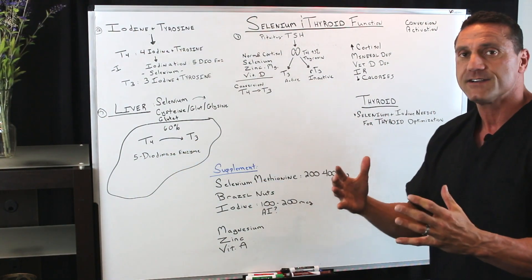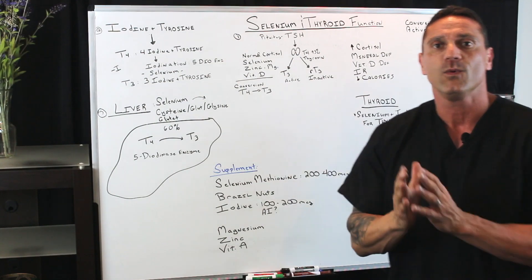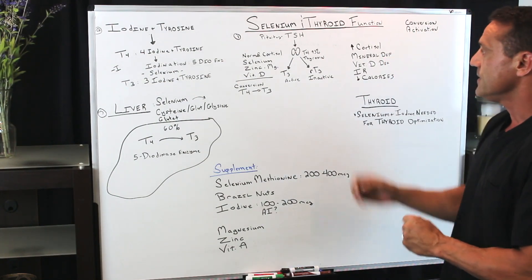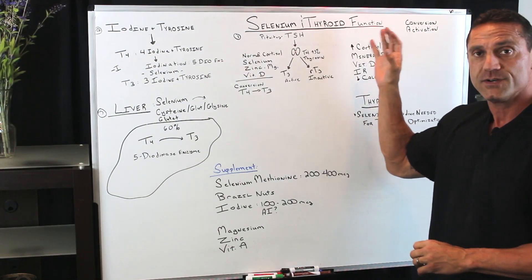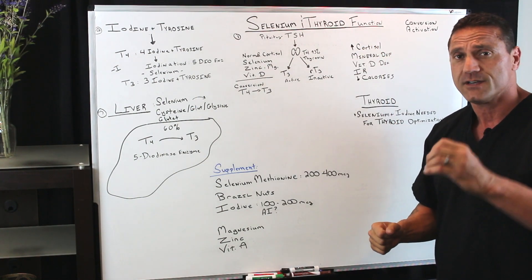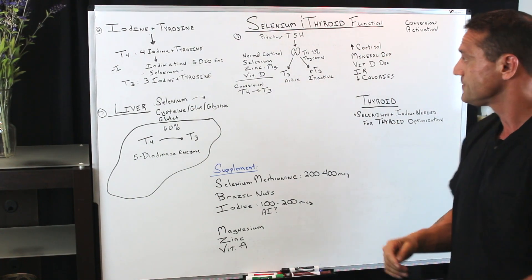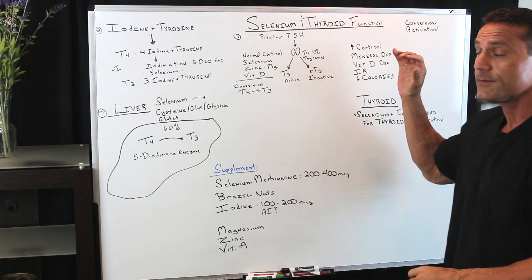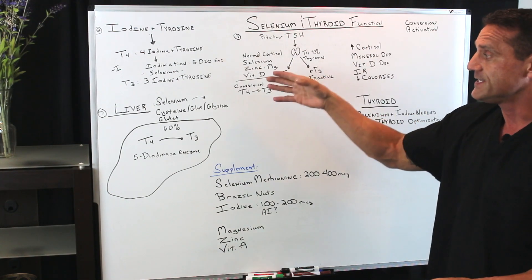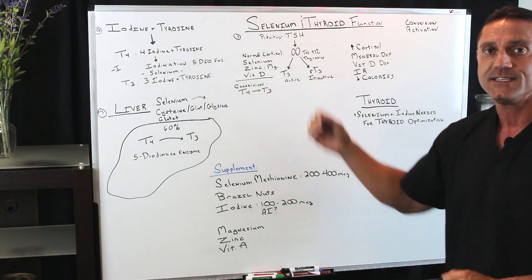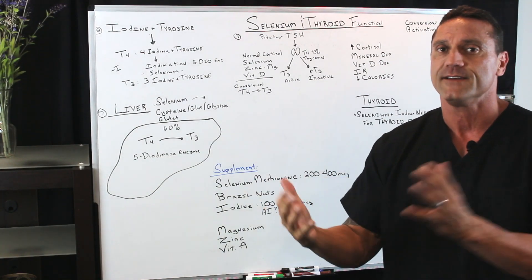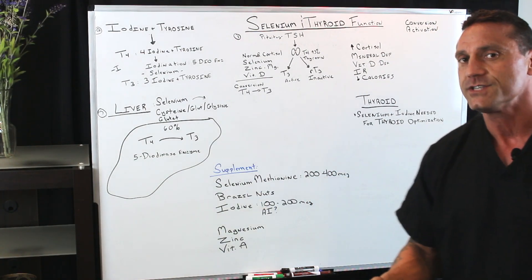There are other factors that affect the conversion. If you have increased circulating cortisol, it's going to shut down the thyroid gland. If you're mineral deficient — selenium, zinc, magnesium, vitamin D — you're not going to have adequate conversion levels.